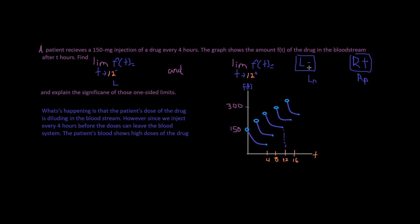A patient receives a 150 mg injection of a drug every 4 hours. The graph shows the amount F of T of the drug in the bloodstream after T hours. Find the limit of F of T as T approaches 12 from the left-hand side and as T approaches 12 from the right-hand side.